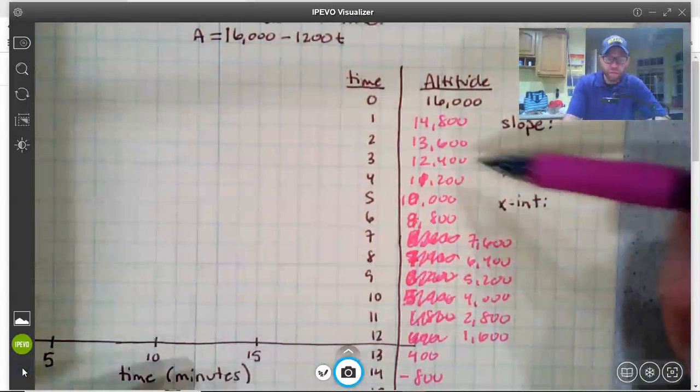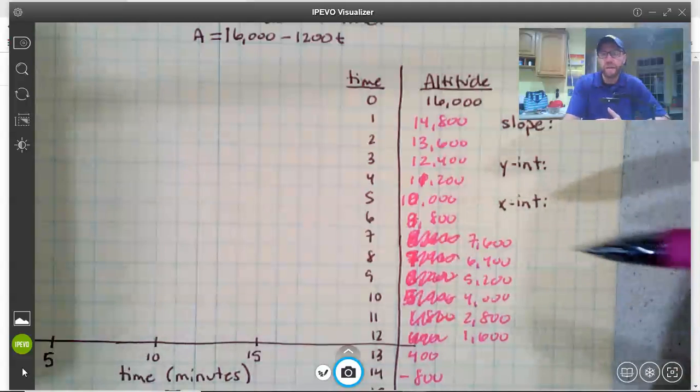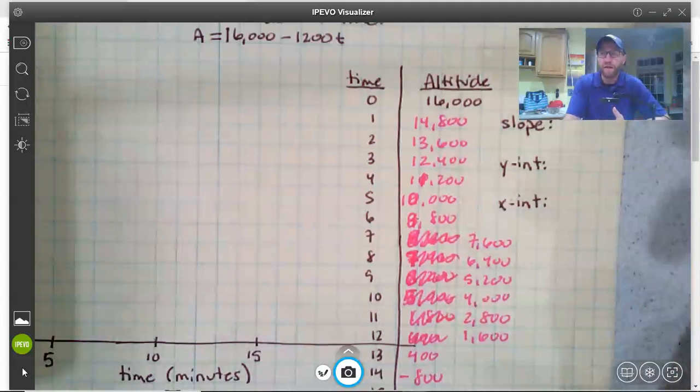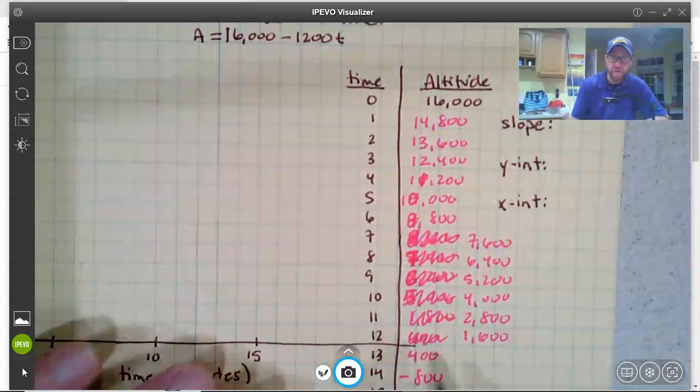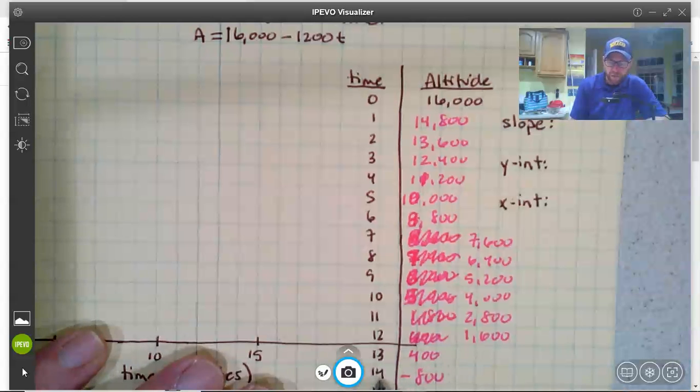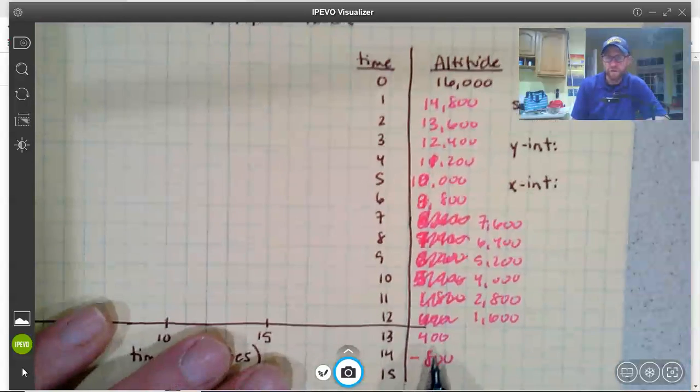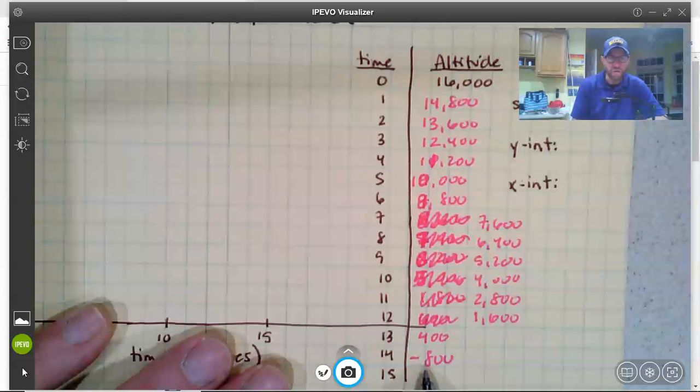So anyway, I filled out my table. And as you can see, I got in a hurry and I got sloppy partway through, and I'm working in pen and I didn't feel like rewriting the whole thing. You can see based on my table that between 13 and 14 minutes somewhere. So at 13 minutes, we're still 400 feet above the ground. At 14 minutes, we're below ground. So somewhere in between 13 to 14 minutes.